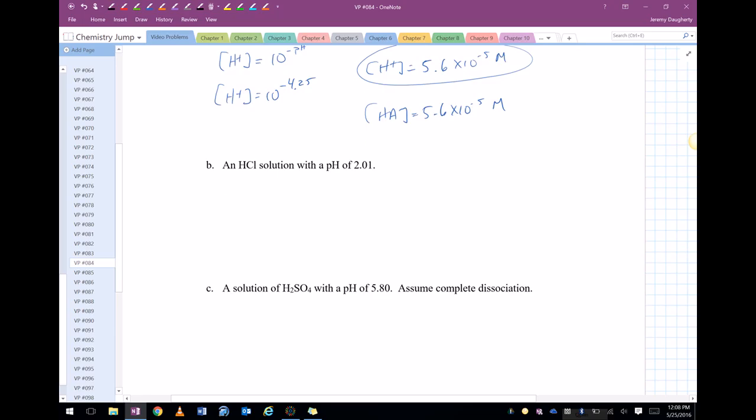Now, HCl solution with a pH of 2.01, same thing. 10 to the negative pH is equal to the concentration of the hydrogen ion. So 10 to the negative 2.01 is equal to the concentration of the hydrogen ion.